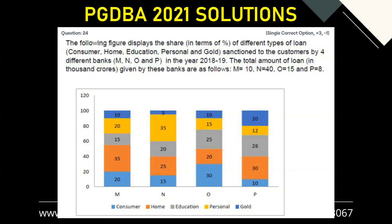Let's solve question number 24. The following figure displays the share in terms of percentage of different types of loans — consumer, education, home, personal, and gold — sanctioned to customers by four different banks M, N, O, P in the year 2018-19. The total amount of loans in thousand crores given by these banks are 10, 40, 15, and 8 respectively.